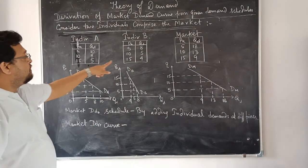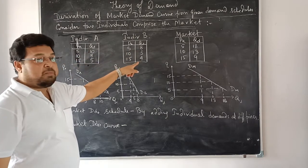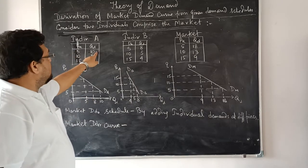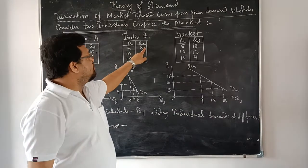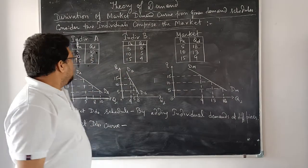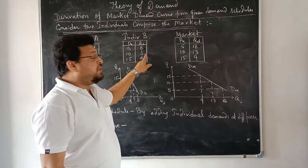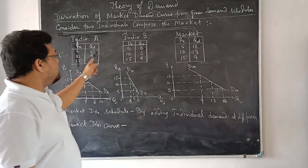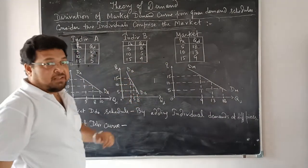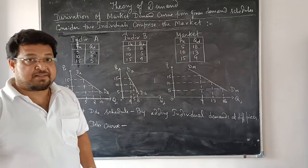The demand schedule for two individuals is given, where at different prices, the demand by A and the demand by B are given. At price 5, consumer A demands 10 units and consumer B demands 8 units, so the market demand is 18 units — 10 plus 8. At price 10, the demand by A is 8 units and by B is 5 units, so the market demand is 13 units, and so on. We get the market demand schedule by adding up individual demands at various prices.